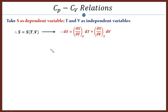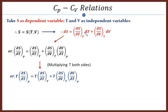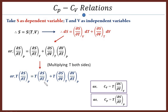Now differentiate this expression with respect to temperature at constant pressure. We get (∂S/∂T) at constant p. Simply multiply both sides by T. Cp is given by T times (∂S/∂T) at constant p, and Cv equals T times (∂S/∂T) at constant v.